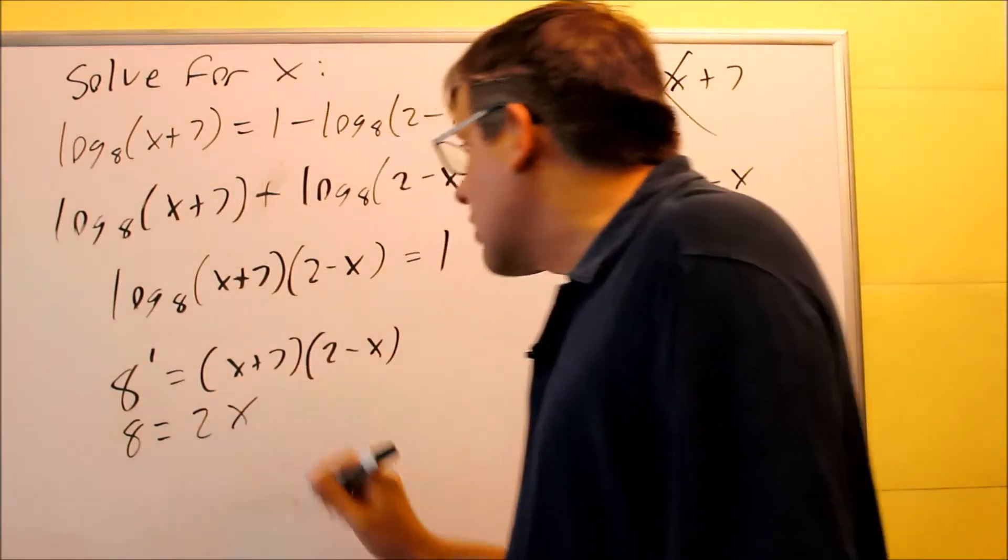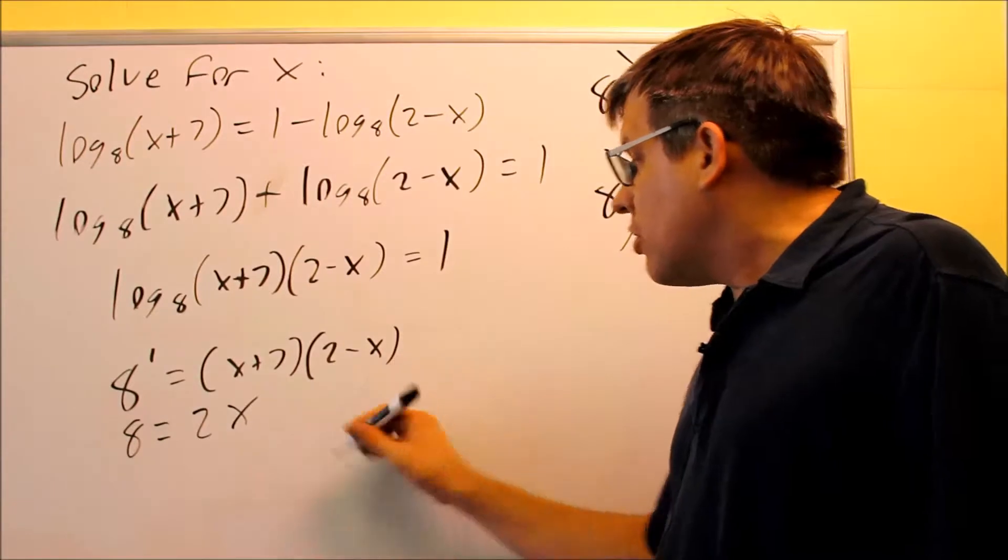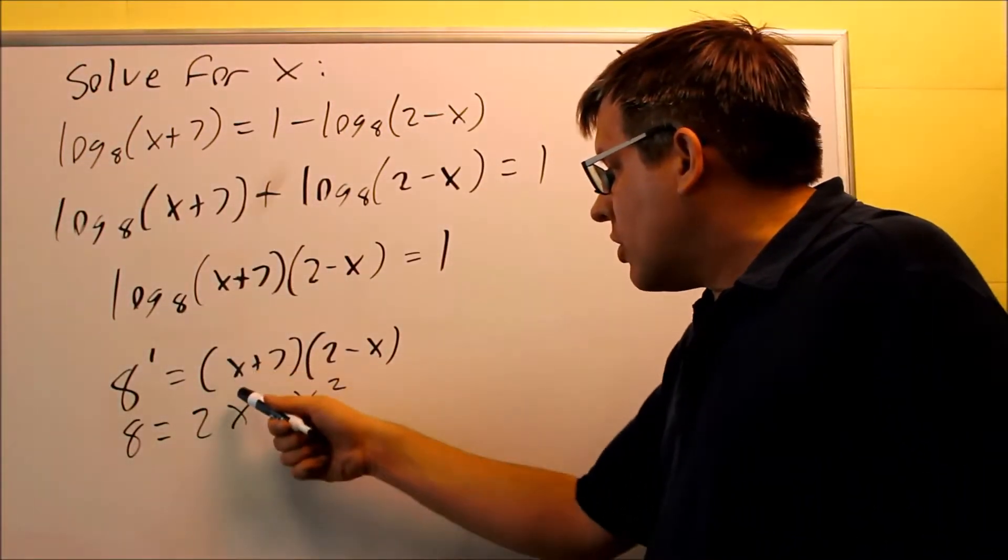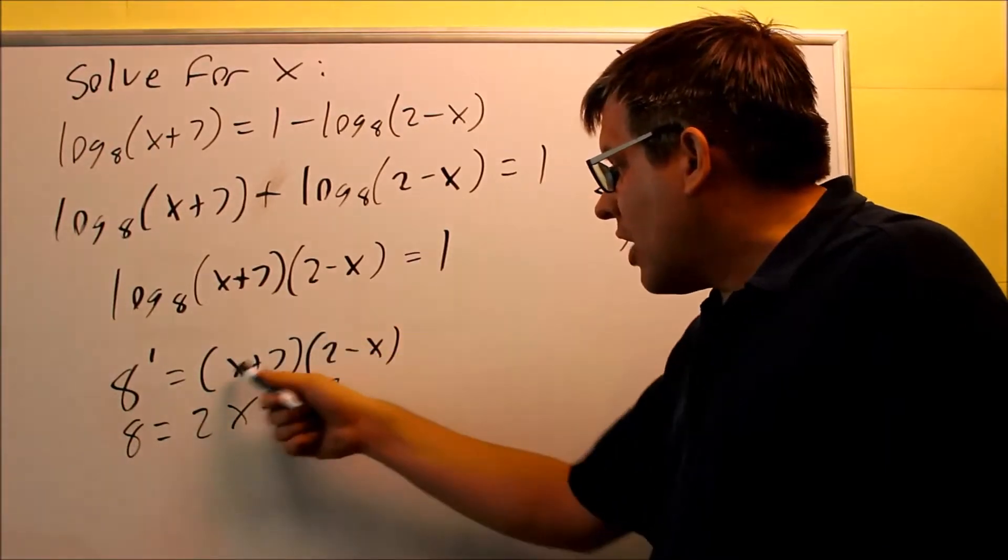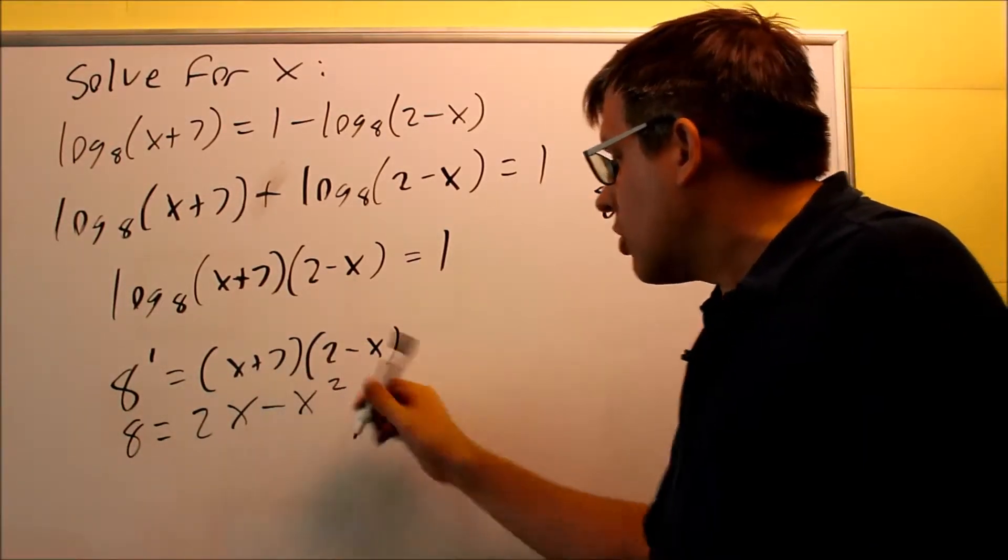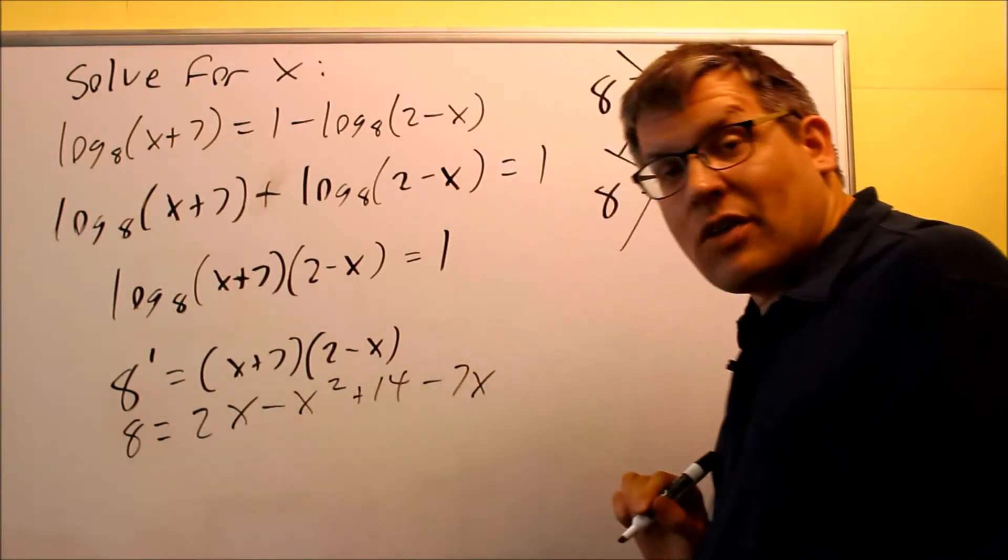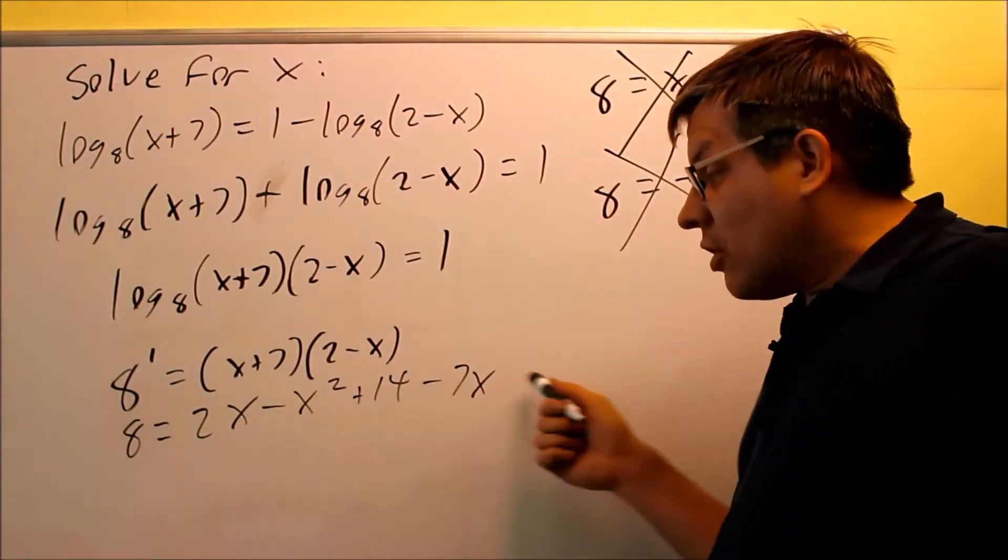x times 2, you get 2x. x times here, you're going to get minus x squared. And then we have, that was the first times this one, then we have x times that one, and then we're going to do the inside terms, so plus 14. And then I have minus 7x. So I've expanded all of it out.